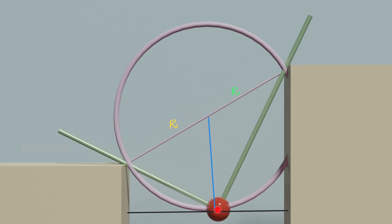If I draw a normal to this tangent, this normal will meet at the center of the circle and this length will be R and this length will be R where R is the radius of this circle.